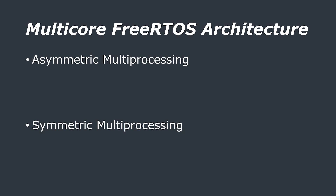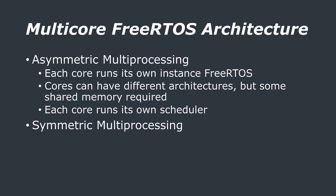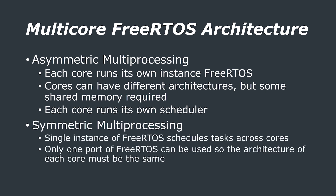In FreeRTOS terms there are two architectures: Asymmetric Multiprocessing (AMP) and Symmetric Multiprocessing (SMP). With AMP, each core runs its own independent version of FreeRTOS, meaning the architectures of each core can be different. Some memory must be shared between cores to enable communication, and each core runs its own scheduler. In an SMP environment, however, a single instance of FreeRTOS schedules tasks across multiple cores, meaning only one port can be used — in this case the RP2040 port — and all cores must share the same architecture.